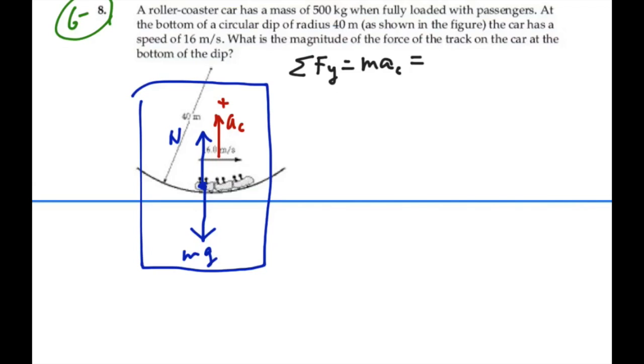So as we look at this, up is positive. So we're going to have normal force minus mg, because the mg is in the opposite direction. So the centripetal acceleration, so we have mass times v squared over r, is equal to normal force minus mg.